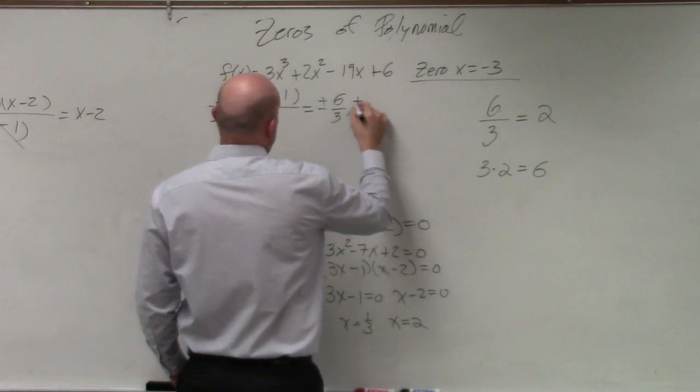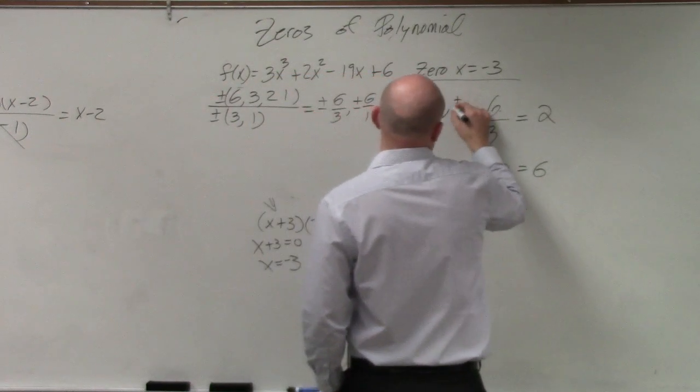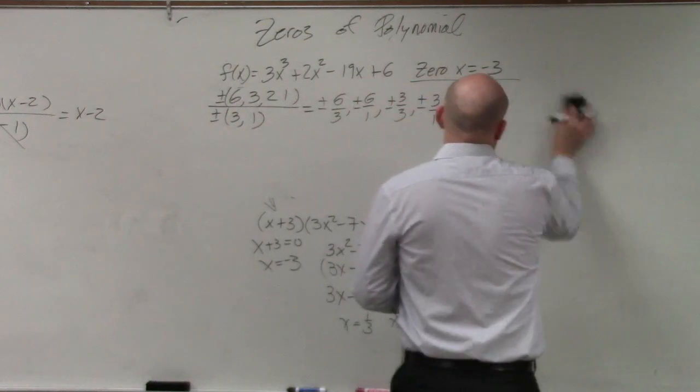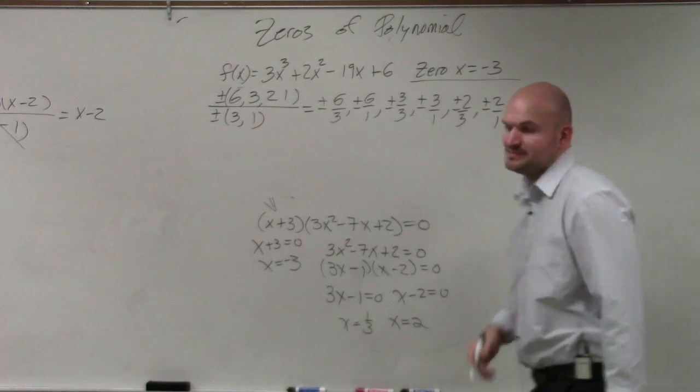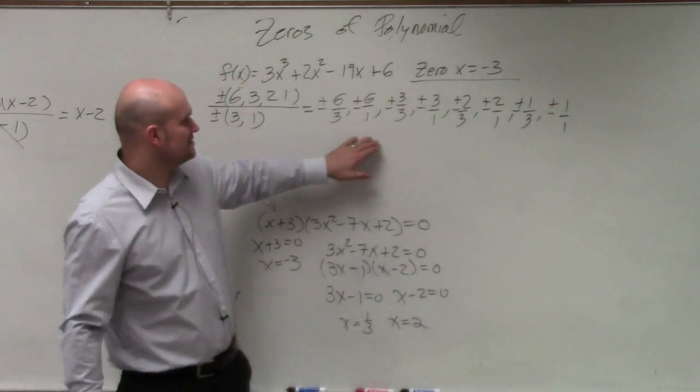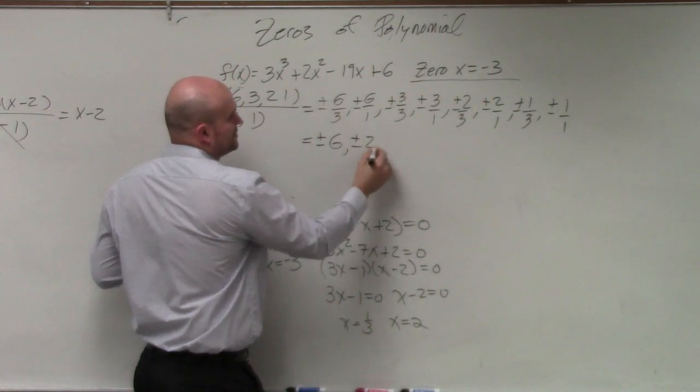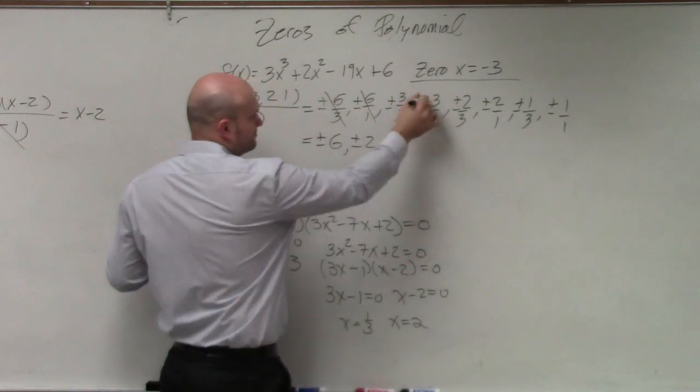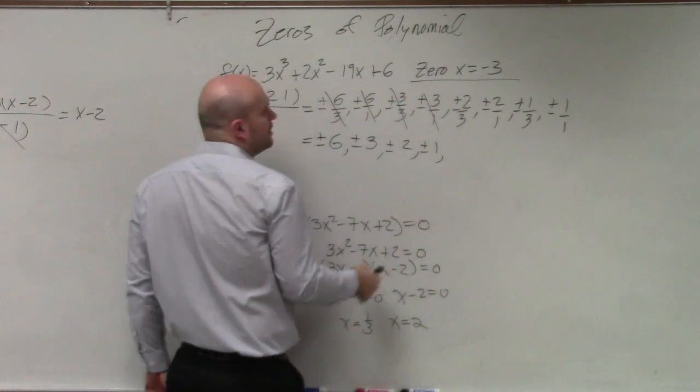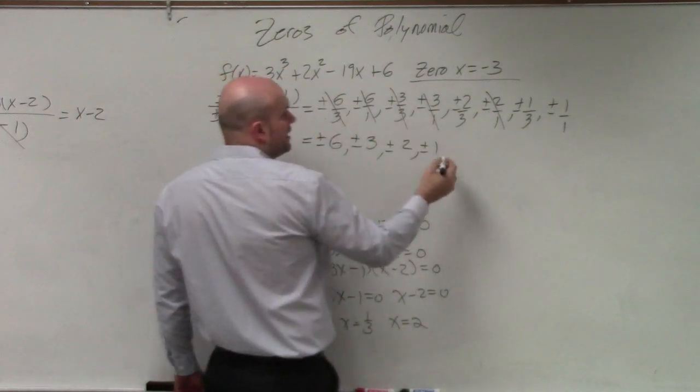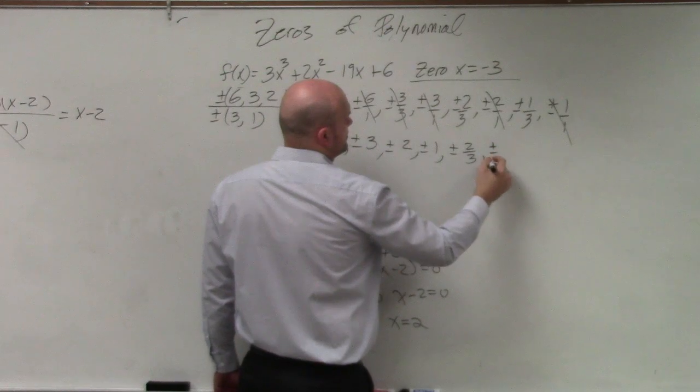So you do 6 over 3 comma plus or minus 6 over 1 comma plus or minus 3 over 1 comma plus or minus 2 over 3 comma plus or minus 1 over 3 comma plus or minus 1 over 1. Now you guys might say, Mr. McClough, that's a lot of work. Well, once you guys kind of get used to this, you'll start to see that a lot of these start to simplify. 6 over 1 is just 6. Then you can do plus or minus 6 over 3 is 2 comma plus or minus, actually we have 3, 3 over 1. Then you have 3 over 3 is 1. That was 2 as well, so that was a duplicate. And then we have, that's 1 over 1, so that's 1, that's a duplicate. Then we have plus or minus 2 thirds and plus or minus 1 third.